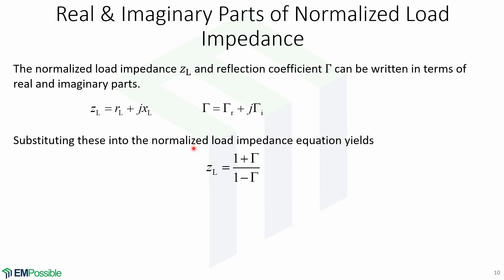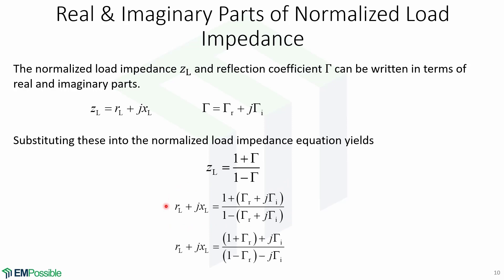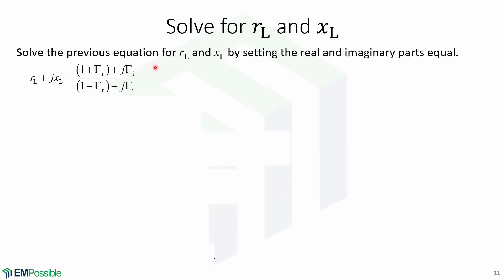We substitute these expressions into the normalized load impedance equation and obtain this expression. We solve the previous equation for RL, which is the real part, and XL, which is the imaginary part, by setting the real and imaginary parts equal.